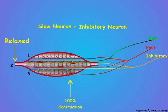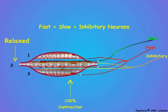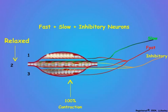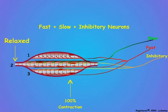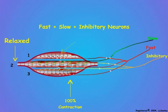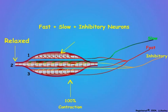Finally, in the last example, both the fast and slow neurons fire simultaneously with the inhibitory neurons. Again, the muscle shortens by only one-third since only muscle fiber 1 is free to respond to its fast neuron.